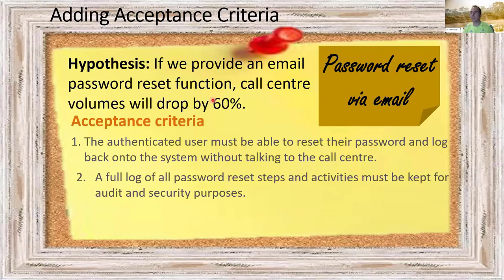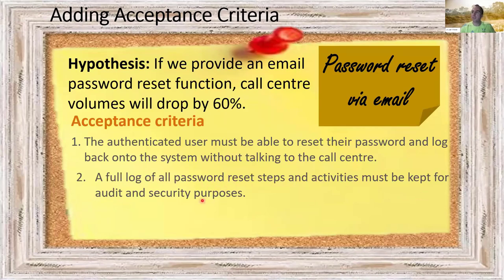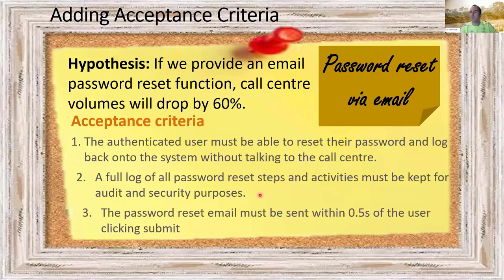One of our testers in discussion might flag the fraud angle — what about security? We'd evolve the acceptance criteria: 'A full log of all password reset steps and activities must be kept for auditing and security purposes.' We're still not designing it, but we're saying this is what needs to happen for compliance. Then we might add a non-functional: 'The password reset email must be sent within half a second of the user clicking submit.' Non-functionals can normally be covered by automated tests, whereas the first two criteria are more like UAT acceptance criteria. And really, for most features, that's the maximum amount of documentation you need.